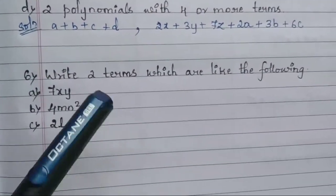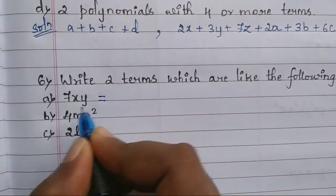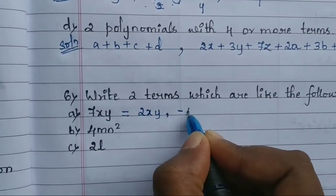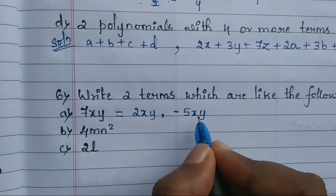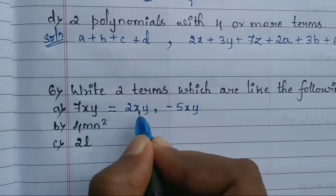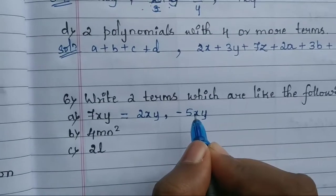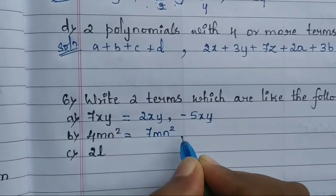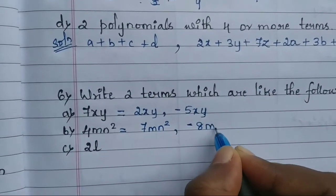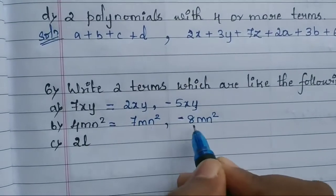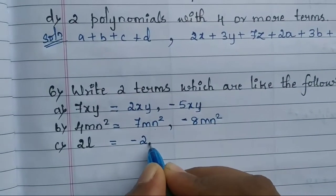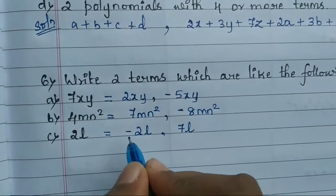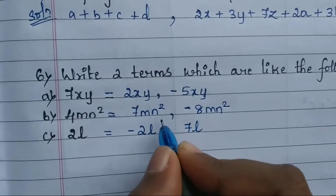Next: write four like terms for the given expressions. For 7x: like terms are 2x, -5x, and others with same variable x and power 1. For 4mn²: like terms are 7mn² and -8mn². For l: like terms are -2l, 7l, 100l, 200l, 1000l — same variable and same power throughout.